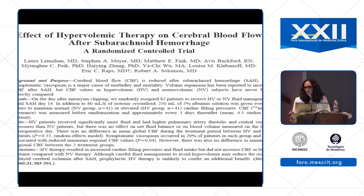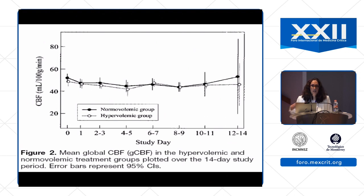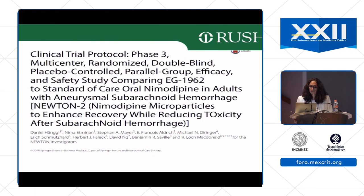Hypervolemia as therapy for vasospasm has been removed from guidelines. A study of 82 patients found that hypervolemia increased cardiac filling pressures and fluid intake but did not increase cerebral blood flow or blood volume compared to normal volemia. The cerebral blood flow was actually slightly better in the normovolemic group. For patients with normal kidney function, excess fluids are simply excreted. It really comes down to maintaining normovolemia — or euvolemia.